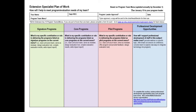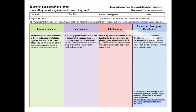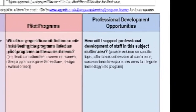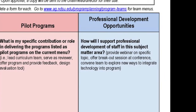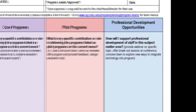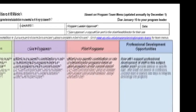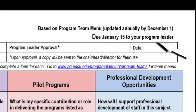We'll begin with the Extension Specialist plan of work. Whether you're an area or a state specialist, you are asked to take a look at the team menu and determine which of the programs you are specifically going to contribute to, and what is your role in delivering the program that's listed — whether it's a signature, core program, or pilot program. You are also asked to list professional development opportunities that you are planning to attend or planning to offer. Once you've completed the plan, you submit it to your program leader.